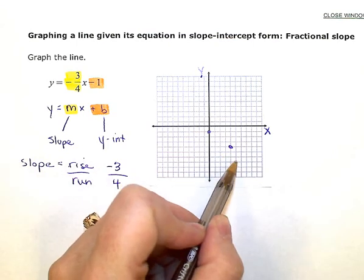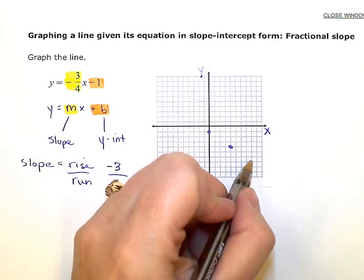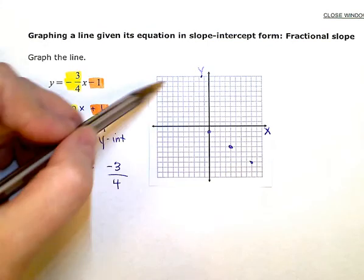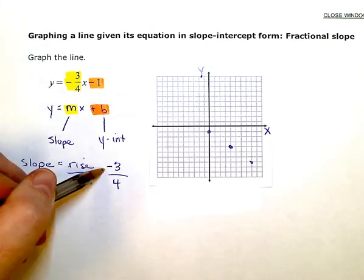Down 3 over 4 to give myself several dots. If I want some more dots up this way, I just reverse it in both directions.